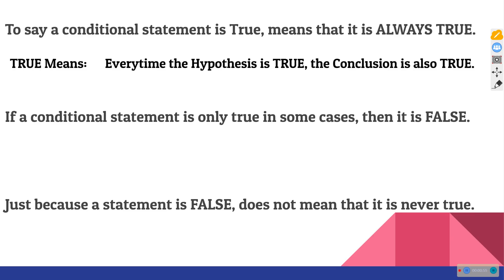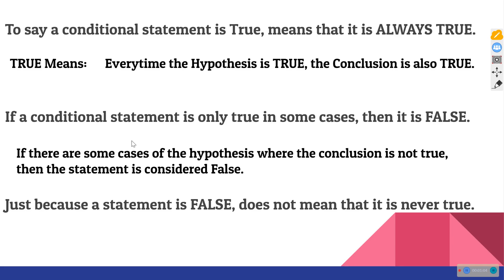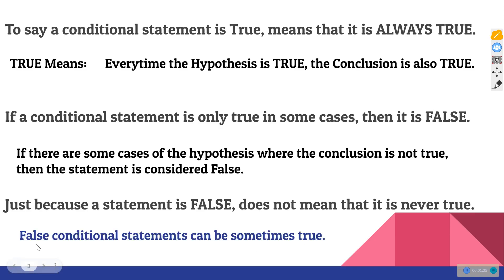When we say that a conditional statement is true, it means that every time the hypothesis is true, the conclusion is also true. If a conditional statement is only true in some cases, then it's false — if there are some cases of the hypothesis where the conclusion is not true, that statement is considered false. Just because it's false doesn't mean it's never true; false conditional statements can sometimes be true.